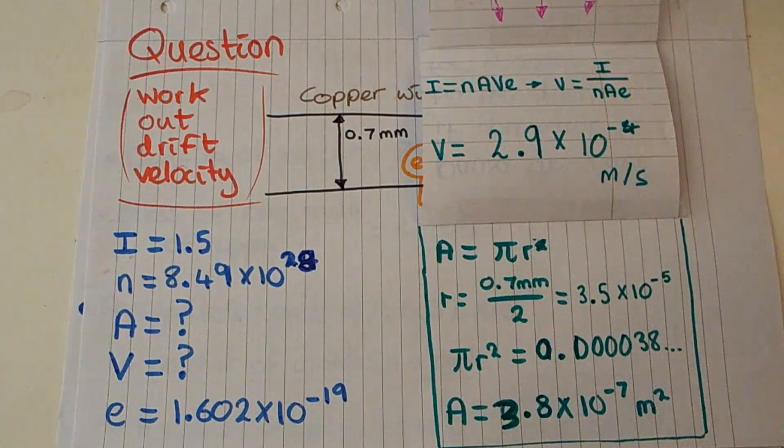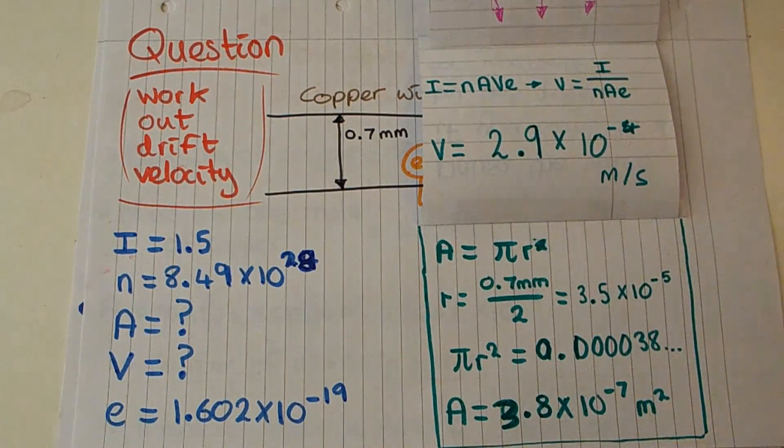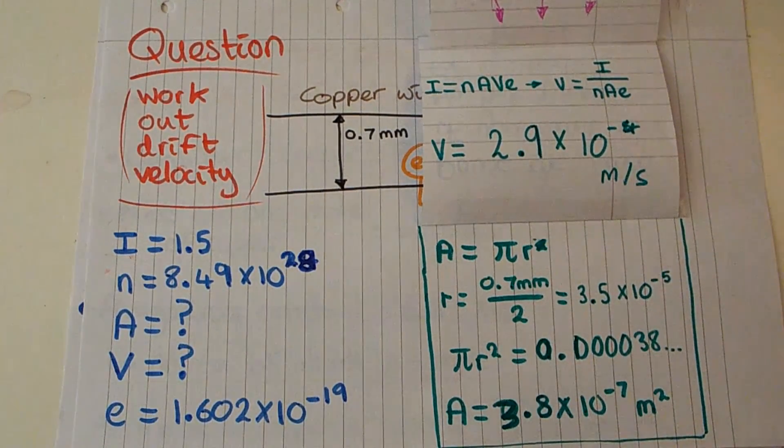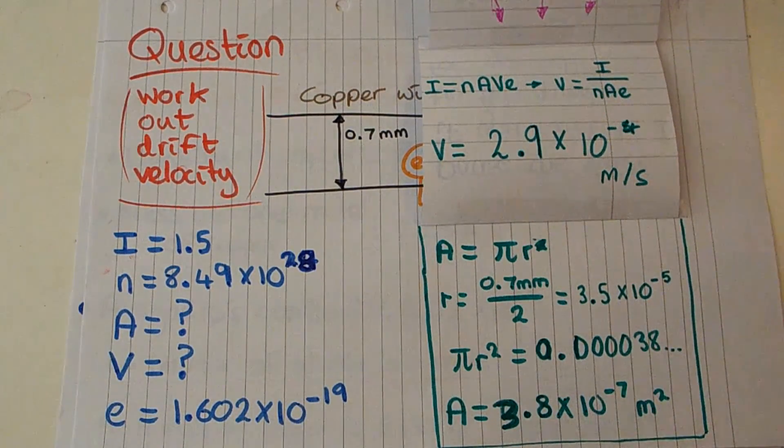If we plug in all the values, 1.5 over 8.49 times 10 to the 28 times 3.8 times 10 to the minus 7 times 1.602 times 10 to the minus 19, then you should get an answer of 2.9 times 10 to the minus 4 meters per second. You might get something like 2.87 depending on if you've rounded in different places, but at two significant figures that's the answer you should be looking at.